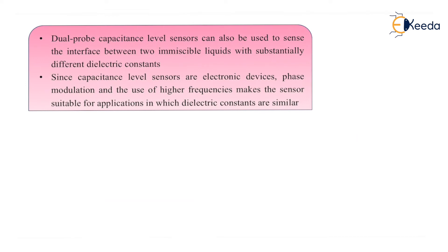In capacitance level measurement, dual probe capacitance level sensors can be used to sense the interface between two immiscible liquids with substantially different dielectric constants. Since these capacitance level sensors are electronic devices, phase modulation and the use of high frequencies make the sensor suitable for applications in which the dielectric constants are similar.